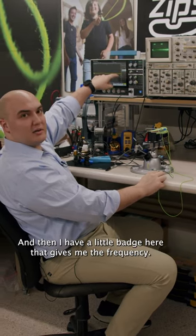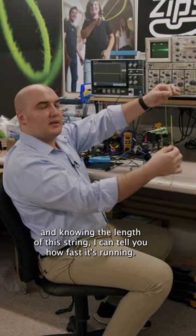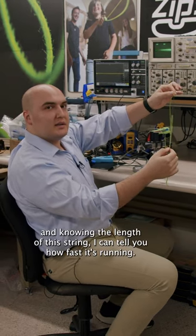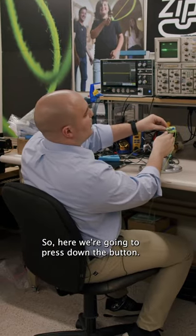And then I have a little badge here that gives me the frequency. Based off of that frequency and knowing the length of this string, I can tell you how fast it's running. So here we're going to press down the button.